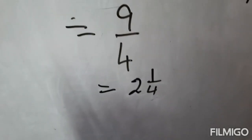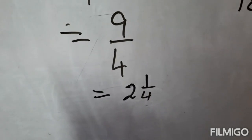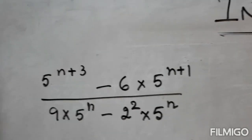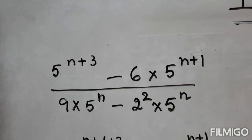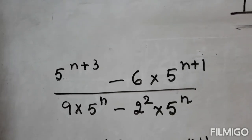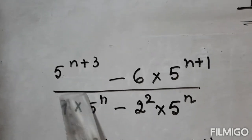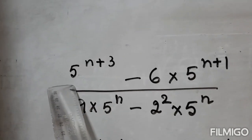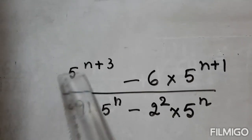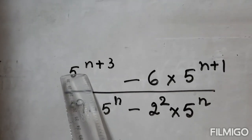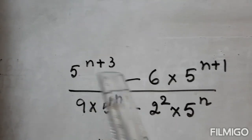So the answer is 5 by 4 plus 1 equals 9 by 4, which we change into mixed number 2 whole 1 by 4.